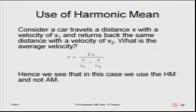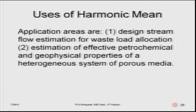For the harmonic mean, consider a car travelling distance x from city A to B with velocity V1, and returning from B to A with velocity V2. If you want to find the average velocity, you use the harmonic mean formula. Other examples include stream flow estimation for waste load allocation and estimation of effective petroleum properties in heterogeneous porous materials.